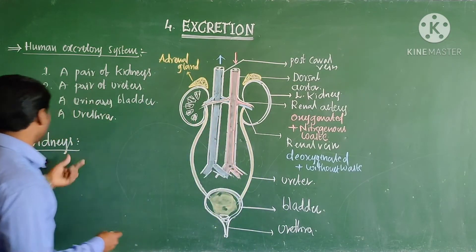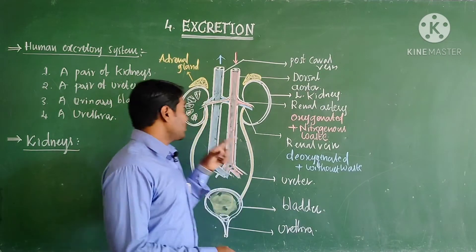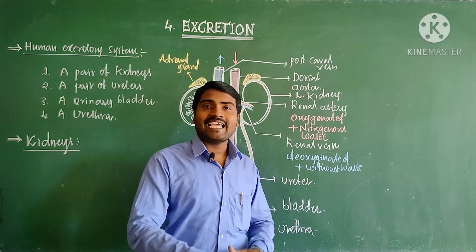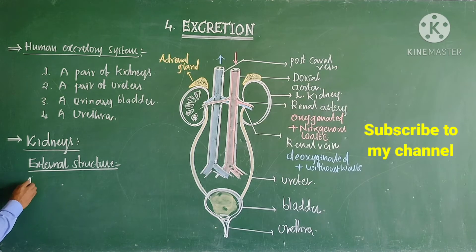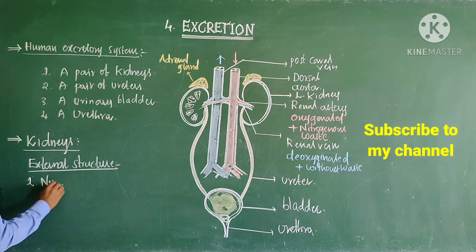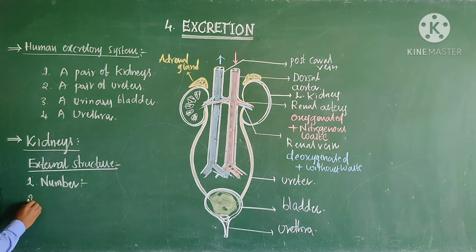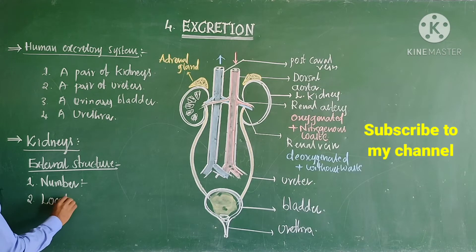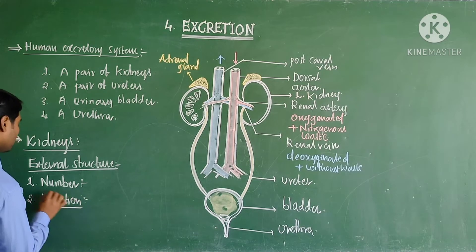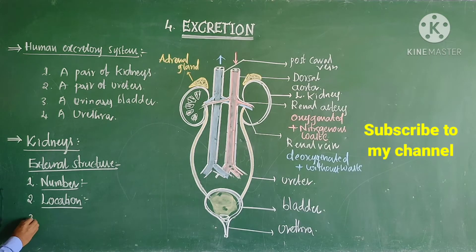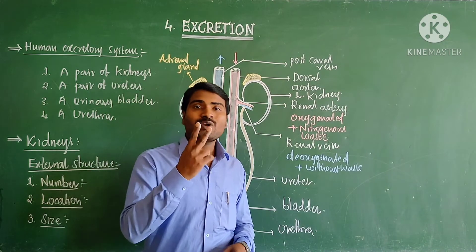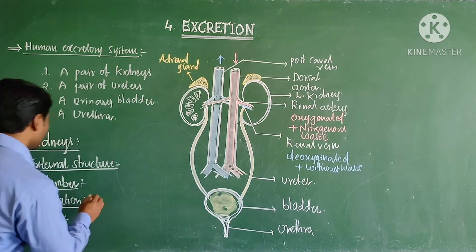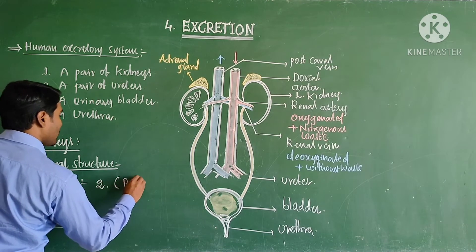Now let us discuss the structure of the kidneys — first the external structure, then the internal structure. In external structure, first let us discuss their number and location. If we talk about the number, how many kidneys are present? Two kidneys — a pair.